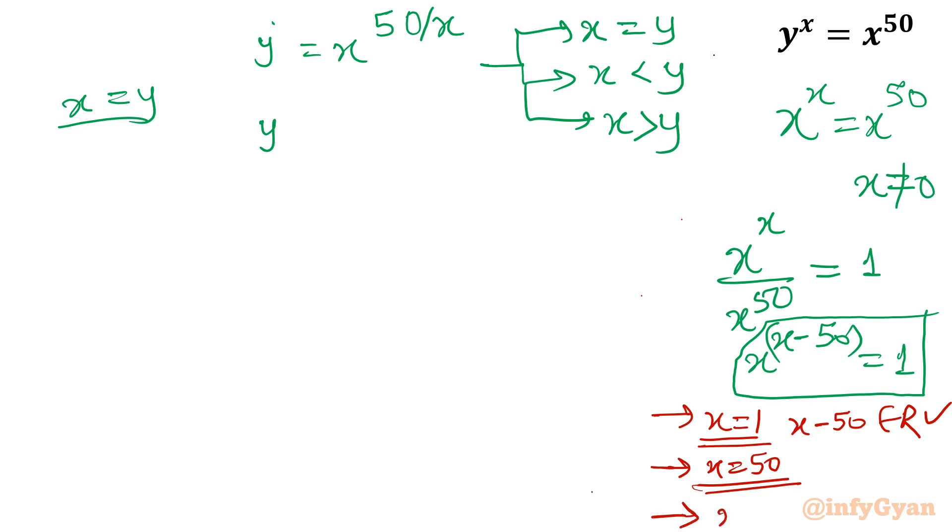Third, base is negative 1, which is not accepted because we are looking for x, y positive integers. So two solutions you are getting from here: x = 1 and x = 50, the extreme boundaries. You can find the value of y directly by putting x = 1, then y = 1; x = 50, then y = 50. So (1, 1) and (50, 50) are available.